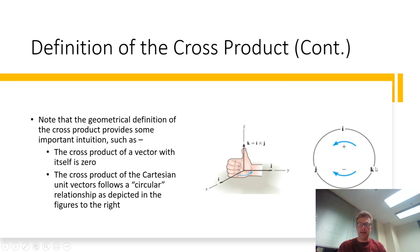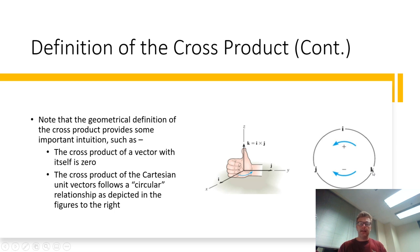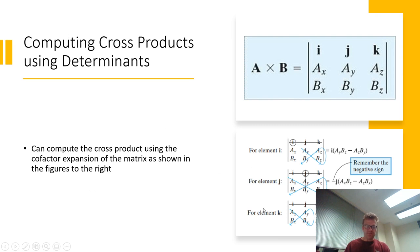If you move in the clockwise direction instead, it's the same pattern but the unit vectors are negated. For example, K cross J equals negative I, and I cross K equals negative J.